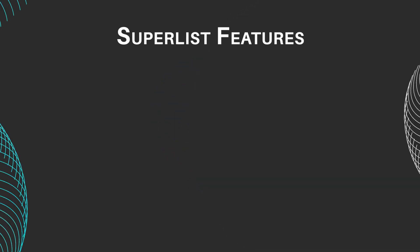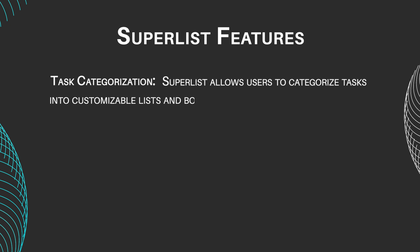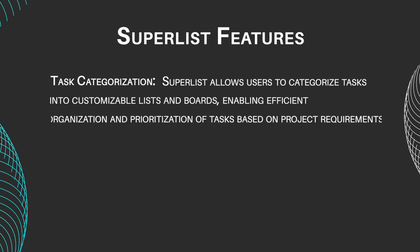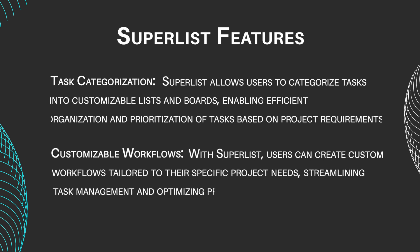Let's take a look at Superlist's main features. Task Categorization: Superlist allows users to categorize tasks into customizable lists and boards, enabling efficient organization and prioritization of tasks based on project requirements. Customizable Workflows: with Superlist, users can create custom workflows tailored to their specific project needs, streamlining task management and optimizing productivity.